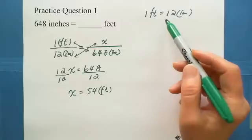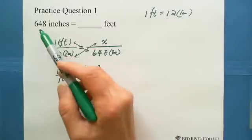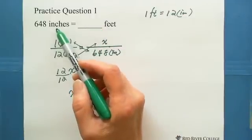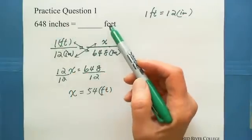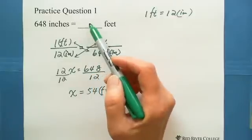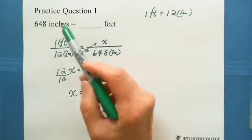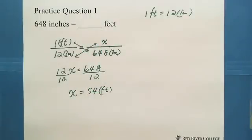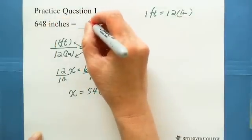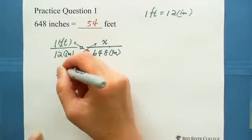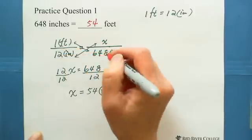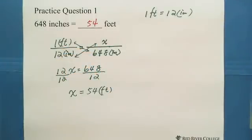And also you think about because the 648, then you got the feet, because there's a small unit and now converted to a big unit, the number should be smaller than this number. So 54 is the number smaller than 648. This is not checking your calculation, but checking if the ratio proportion setup is correct.